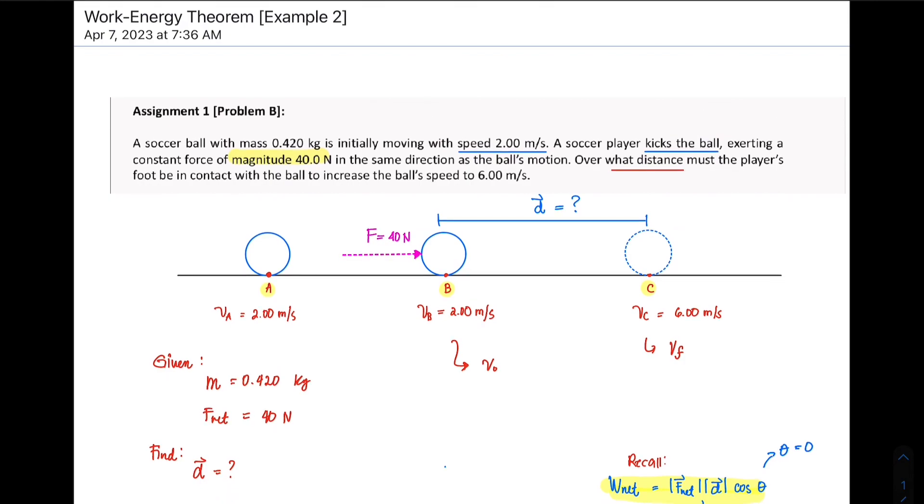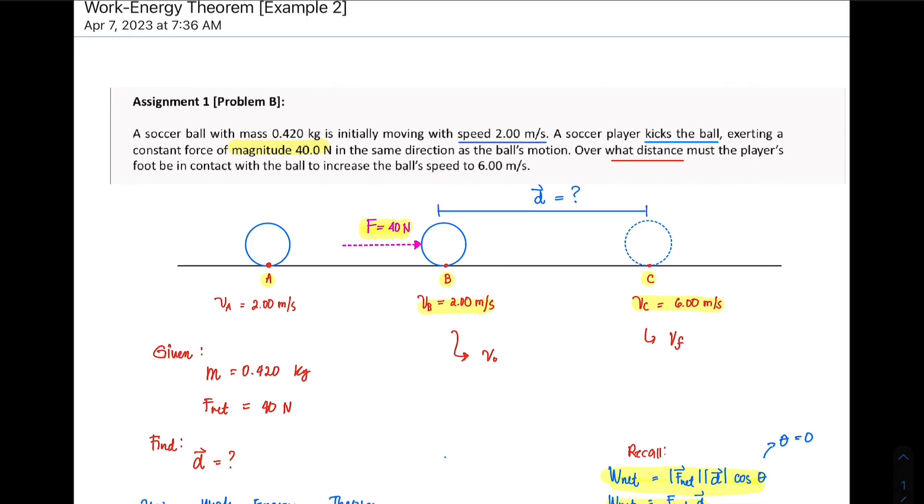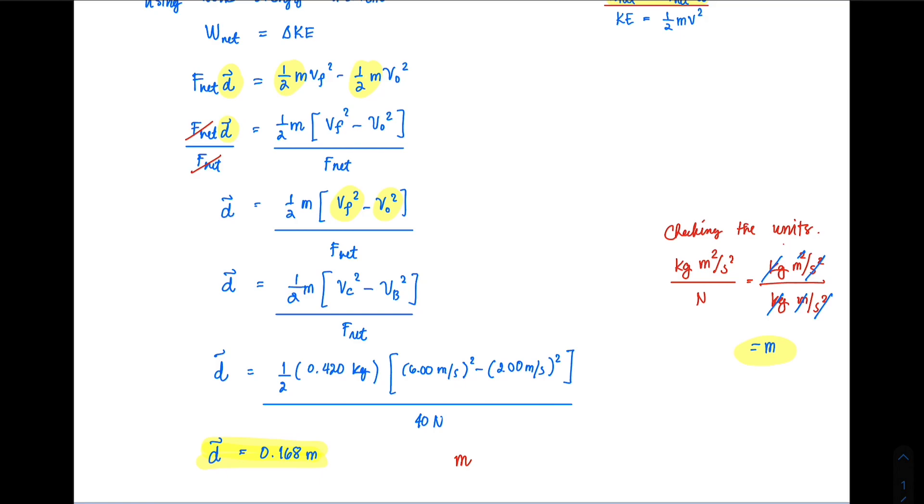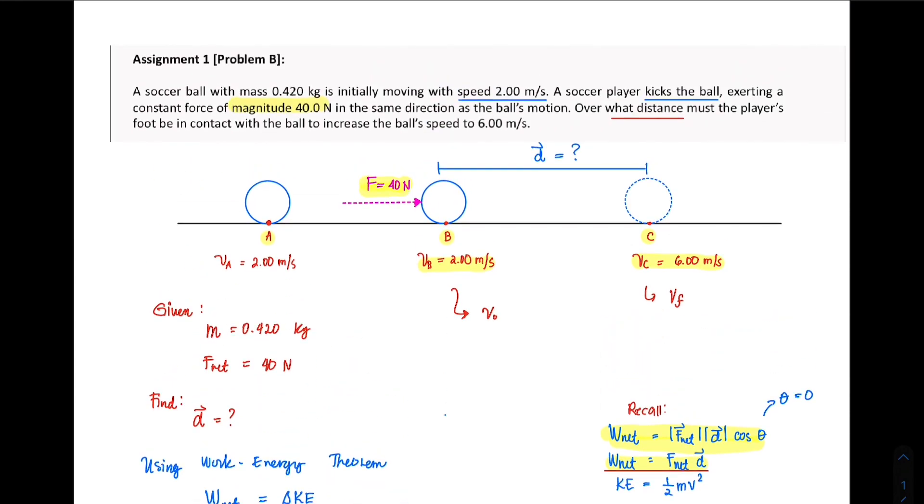That means this 40 newton force, in order to change the velocity of your soccer ball from 2 meters per second to 6 meters per second, must be in contact with the ball for a distance or displacement of 0.168 meters. That is the displacement from point B to point C.